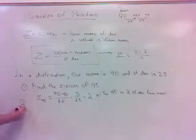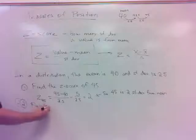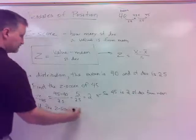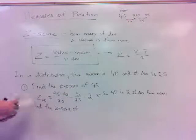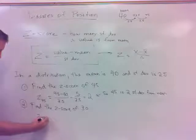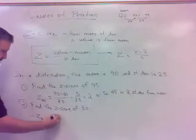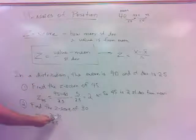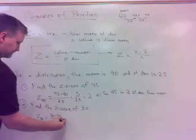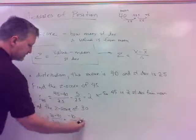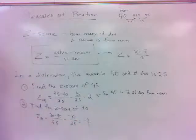Number two, find the z-score of 30. The z-score of 30 is 30 minus 40 divided by 2.5. That gets you negative 10 divided by 2.5, which is negative 4.